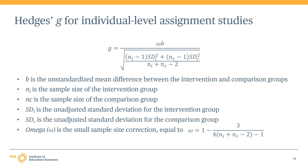Let's walk through this equation together. The numerator of the effect size calculation includes B, which represents the unstandardized mean difference between the intervention and comparison groups on some baseline characteristic. This mean difference is multiplied by an omega term, which is simply the small sample size correction. This omega term is what differentiates the Hedges G effect size from the popular Cohen's D effect size you often see in the literature.